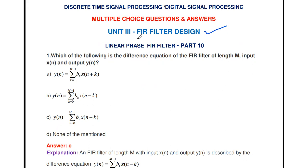FIR means finite impulse response filter. Depending upon the impulse response of the filter, the filter can be divided into two types: IIR (infinite impulse response filter) and FIR (finite impulse response filter). In this video we are going to see about the linear phase FIR filter basics.